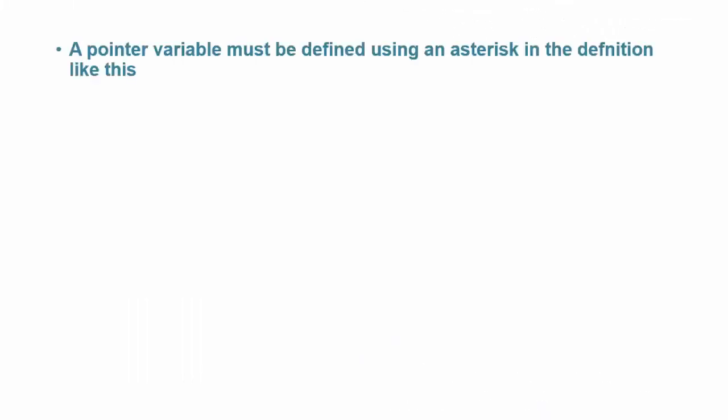Let's take a moment and restate the various rules we need to follow when using pointers. A pointer variable must be defined using an asterisk in the definition like this. It defines a pointer that will be used with an integer variable.